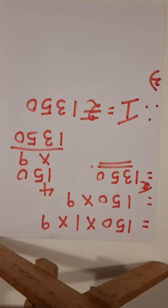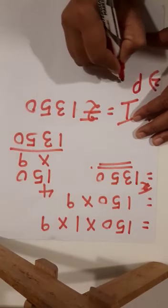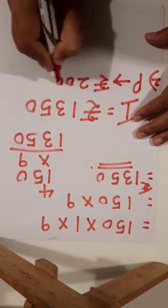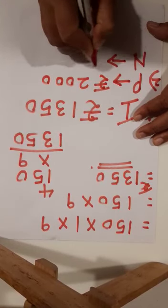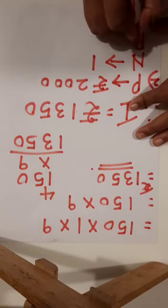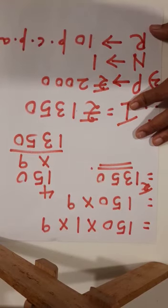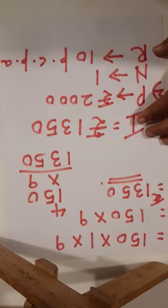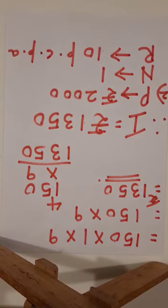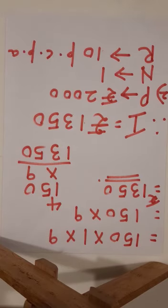Now let's do one more sum. Ram deposited rupees 2,000 in a bank, so Principal is equal to rupees 2,000. For one year, so Number of years is 1. At the rate of interest 10 PCPA, so Rate of interest is 10 PCPA. The question asks: what is the amount that he will get at the end of the year? To find the amount, first find the interest, then use the amount formula.